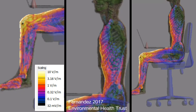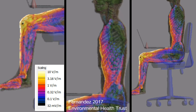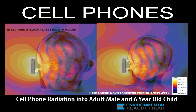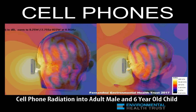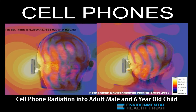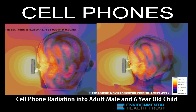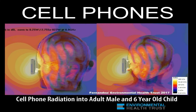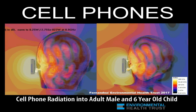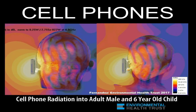These images show how the field penetrates the body. Children are proportionally more exposed to cell phone radiation than adults. This is the electrical field at 900 MHz with two human models: one is a 34-year-old male and the other is a 6-year-old child.